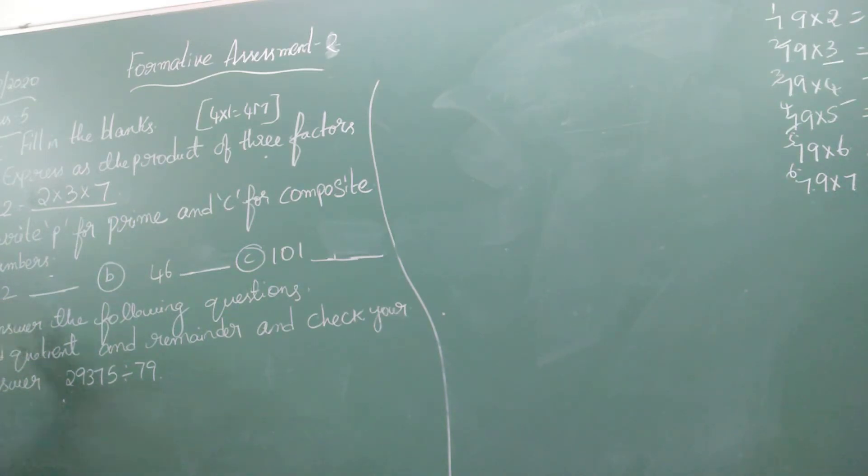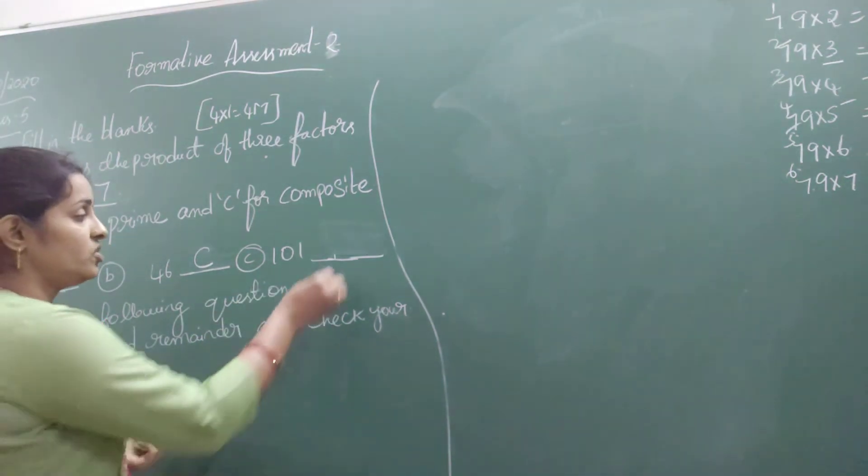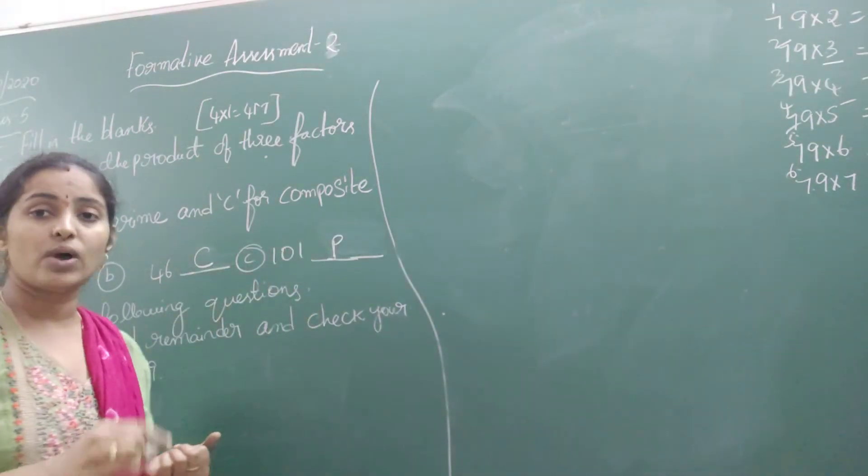The number 12 is a composite number represented by letter C, having more than two factors. In the same way, number 46 also has more than two factors, so it is composite. The number 101 is prime, having factors 1 and itself.